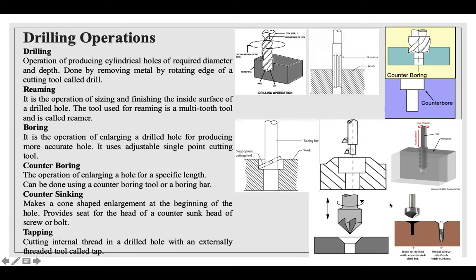Various drilling operations are performed on the drilling machine. Drilling is the operation of producing cylindrical holes of required diameter and depth by rotating a cutting tool called a drill, which is fed into the workpiece to remove material and create a hole. Reaming is the operation of sizing and finishing the inside surface of a drilled hole; the tool used is a multi-fluted tool called a reamer. Boring is the operation of enlarging a drilled hole to produce a more accurate hole using an adjustable single-point cutting tool; the hole size is increased up to a particular depth.